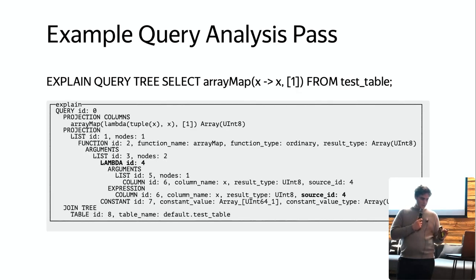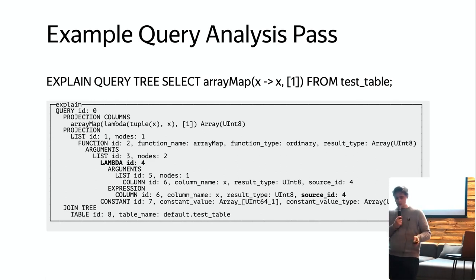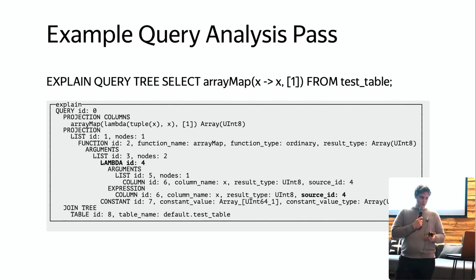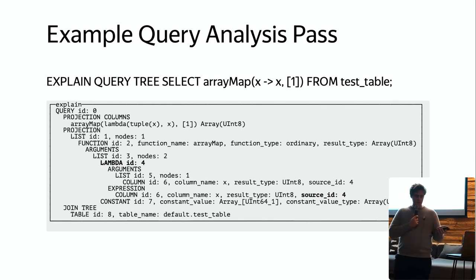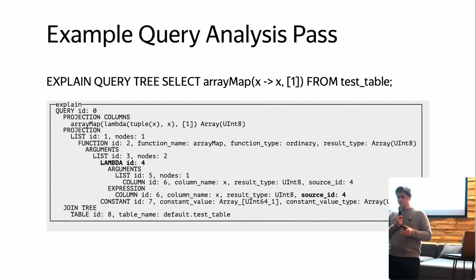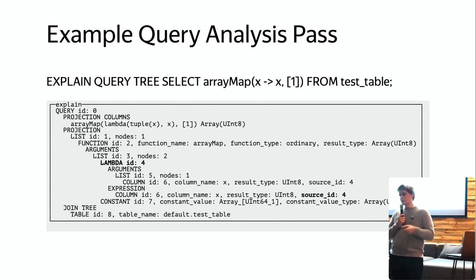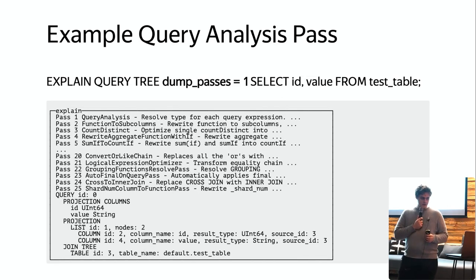Here's a more complex example: `SELECT arrayMap(x -> x, [1])`. In the query tree there is an arrayMap function with a known result type. Inside the lambda there is a column whose source is the lambda itself — so if there is also a column `x` in the table, we correctly understand it comes from the lambda, not the table.